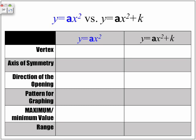So let's make the comparison. In terms of vertex, when in this format, the vertex is 0, 0. When the vertex is in this format, it's 0 and whatever this value of k is will be the vertex or represent the y value of the vertex.